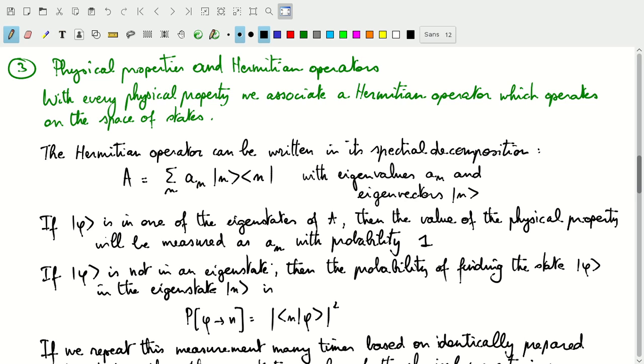That is given by the probability amplitude modulus squared as described by postulate 2. The probability of finding state phi in eigenstate n is equal to the scalar product of n and phi modulo squared.